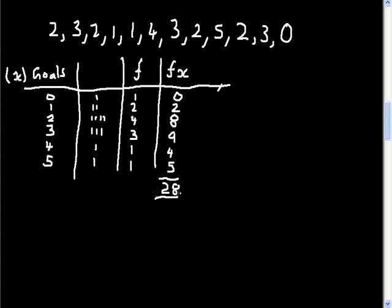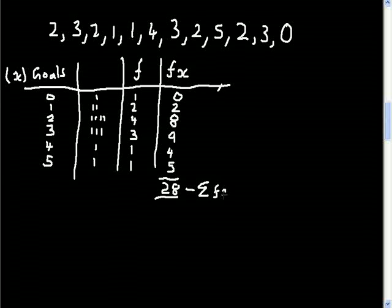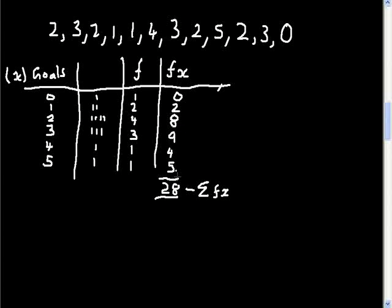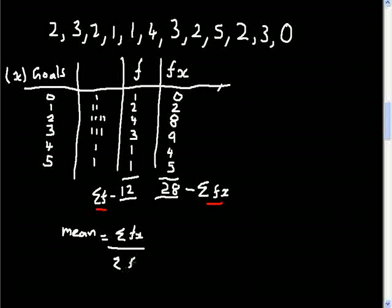Adding all the fx values gives 28, which is the same as adding all the raw goals together — 28 goals in 12 games. We use the notation Σfx for the sum of fx, which is 28, and Σf for the sum of frequencies, which is 12. The mean for a grouped frequency table is Σfx divided by Σf.